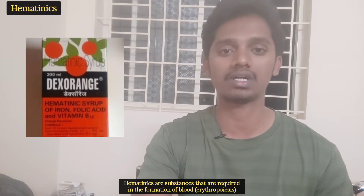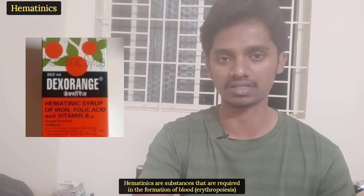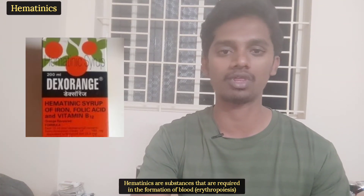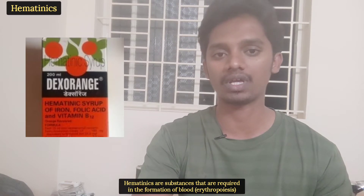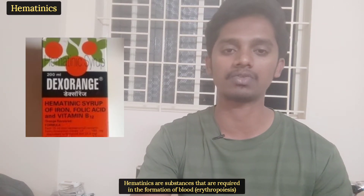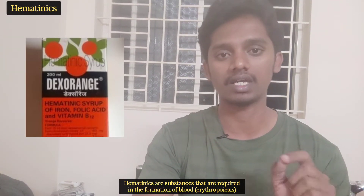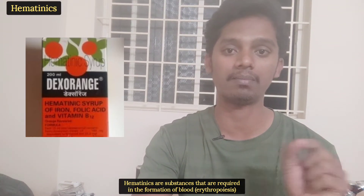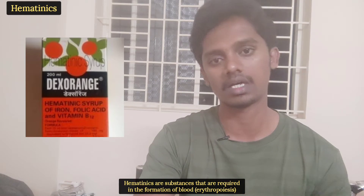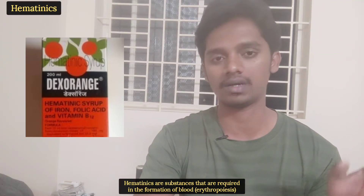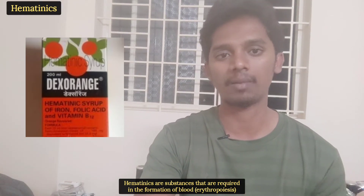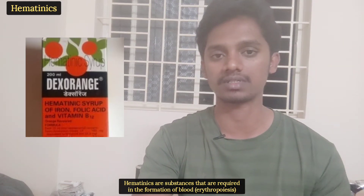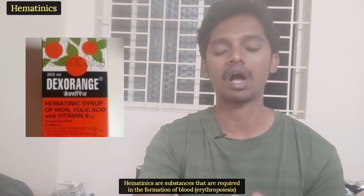If you look at hematopoietic growth factors, those are secondary. The primary hematinics are 3 compounds: iron, vitamin B12, and folic acid. In the word 'hematinics', heme refers to blood, and '-tinic' relates to forming one of them — so hematinics means a substance involved in blood formation.